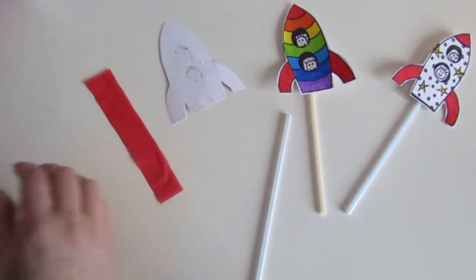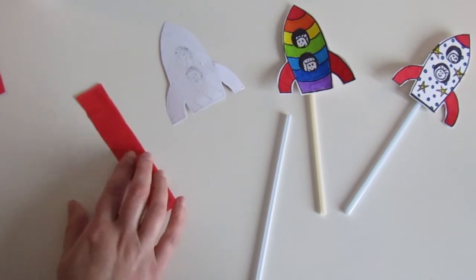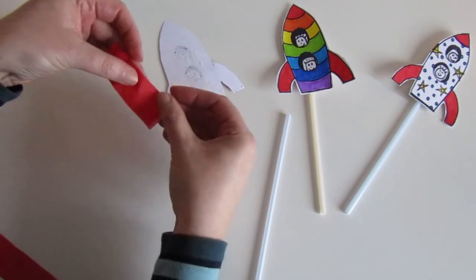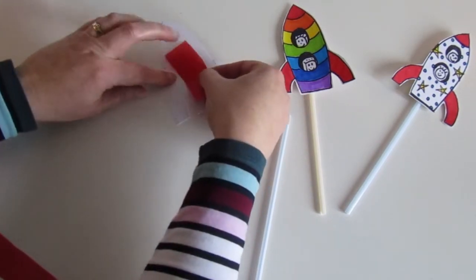OK, and we're going to fold our piece of tissue in half just like this one here. We want the open end down at the bottom of the rocket. So let's just pop that on.